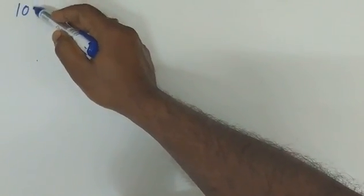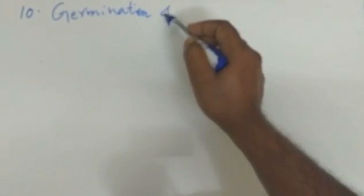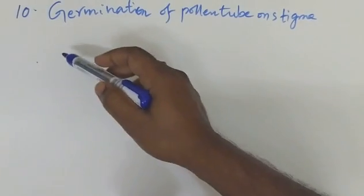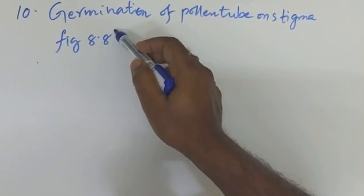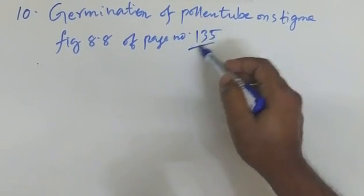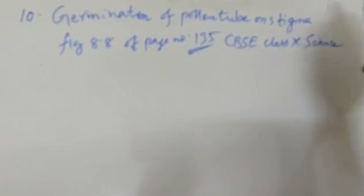Next, the tenth question: draw the labeled diagram of germination of pollen tube on stigma. Regarding this, you have to draw the diagram given in figure 8.8 of page number 135 of your science textbook.